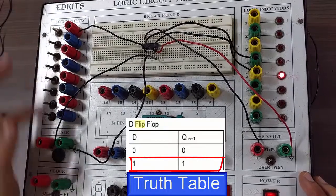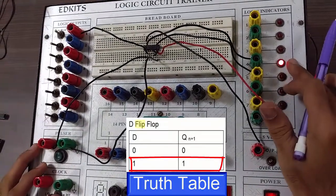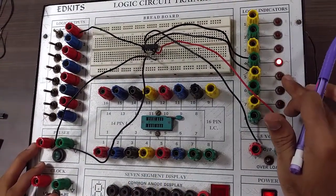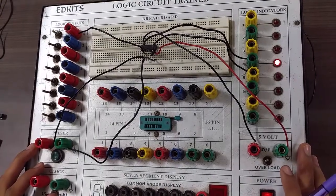If you make data as 1 and apply a clock pulse, you will get Qn as 1 and Qn bar as 0. And the truth table for D flip flop is verified.